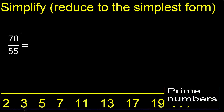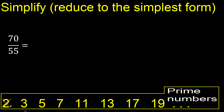Can 70 and 55 be divided by 2? No, because 55 cannot be divided by 2 — the last digit is not even. Cannot be divided by 3 either, because 5 plus 5 is 10, and 10 cannot be divided by 3.